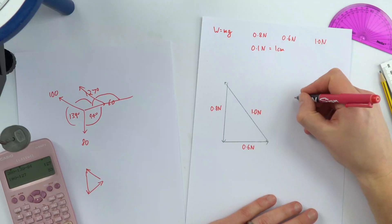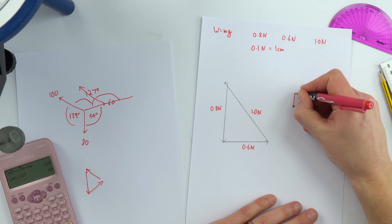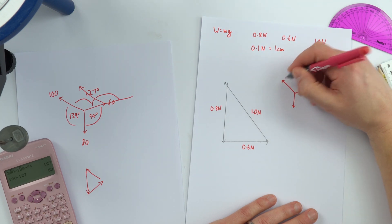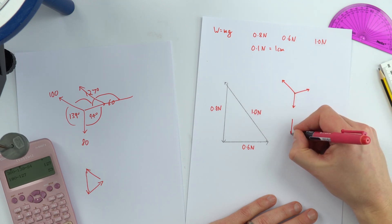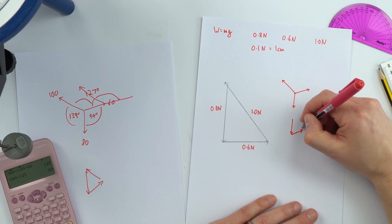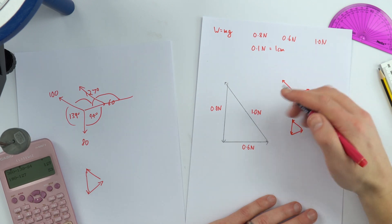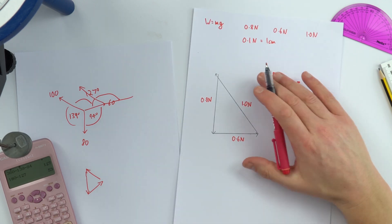This just shows if you've got three forces in equilibrium we can draw them maybe a bit like a free body diagram where you have all the forces acting from one point, but we can take these same forces, we can join them end to end and if the object is in equilibrium then we're going to have a closed triangle of forces.